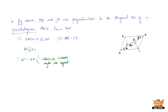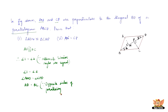Considering triangles ADN and CBP: we have angle 1 equals angle 2, and angle AND equals angle CPD because they are both right angles. We also have AD equal to BC because opposite sides of a parallelogram are equal. This is angle, angle, side — so by AAS congruence criterion, triangle ADN is congruent to triangle CBP.